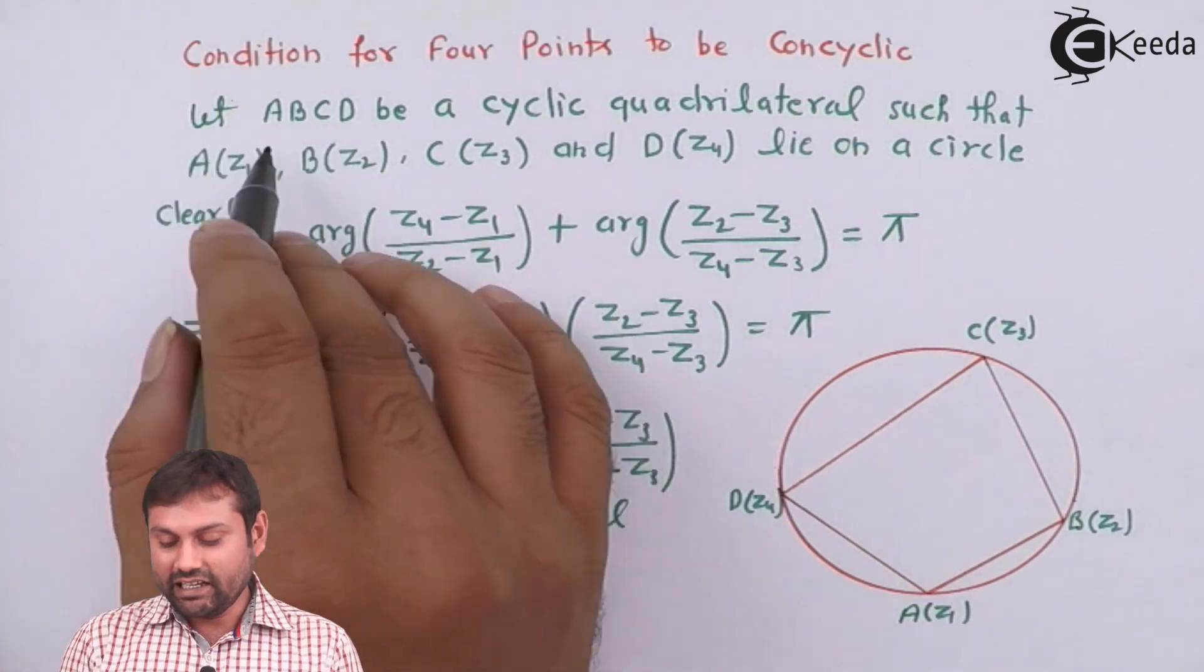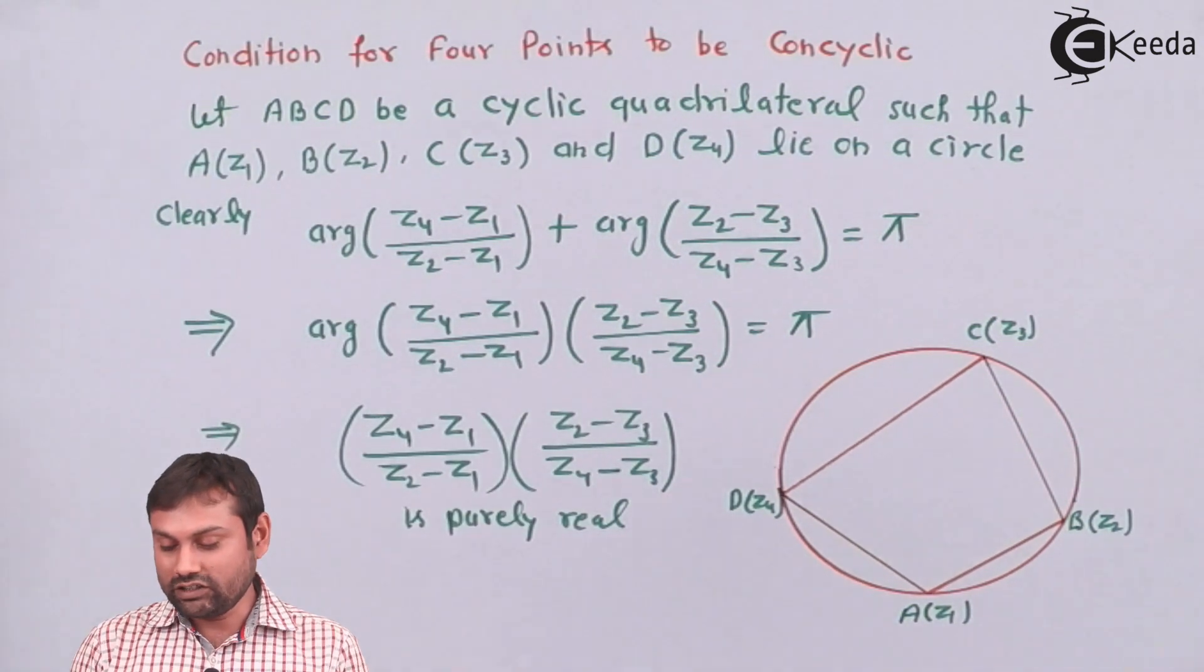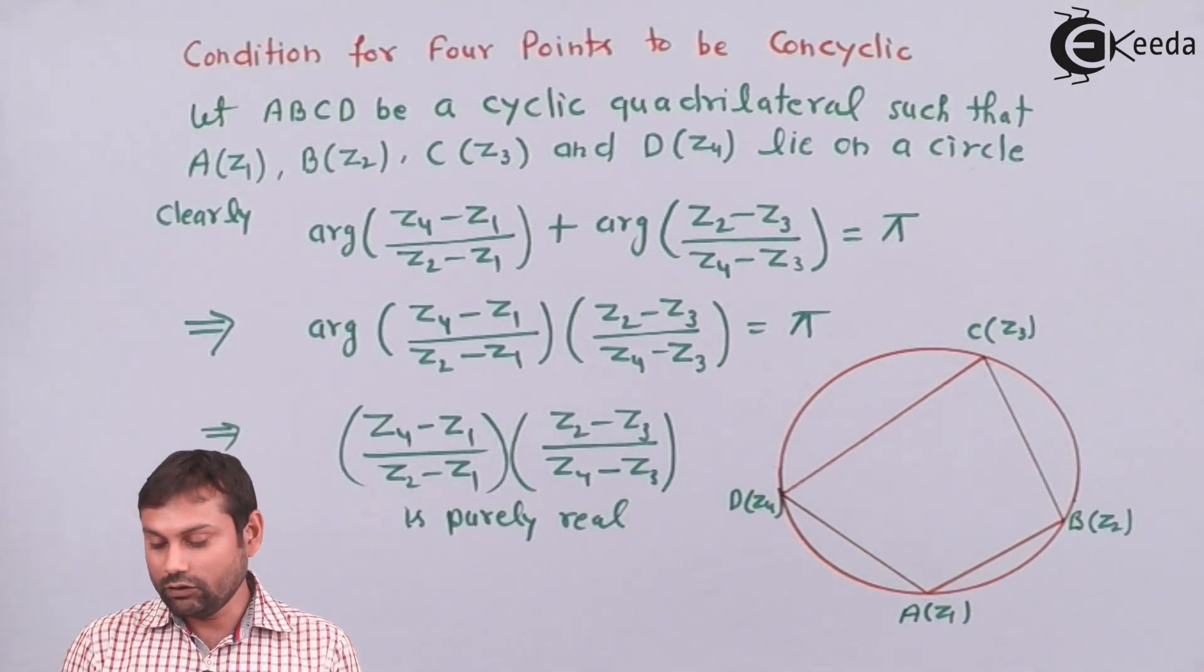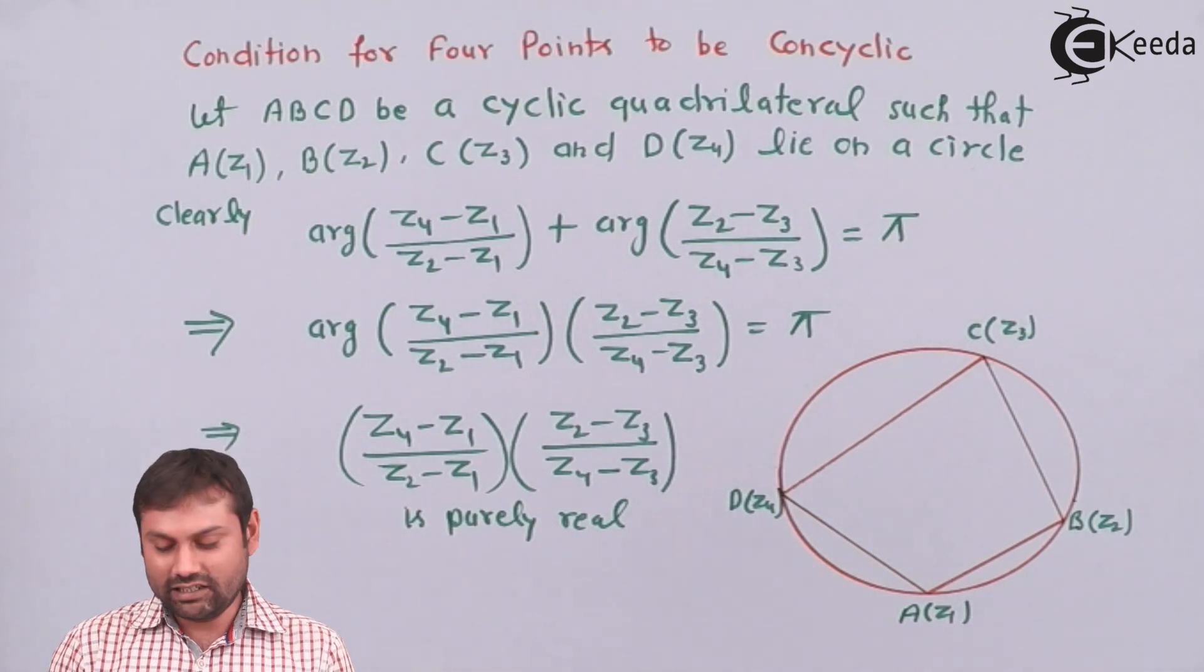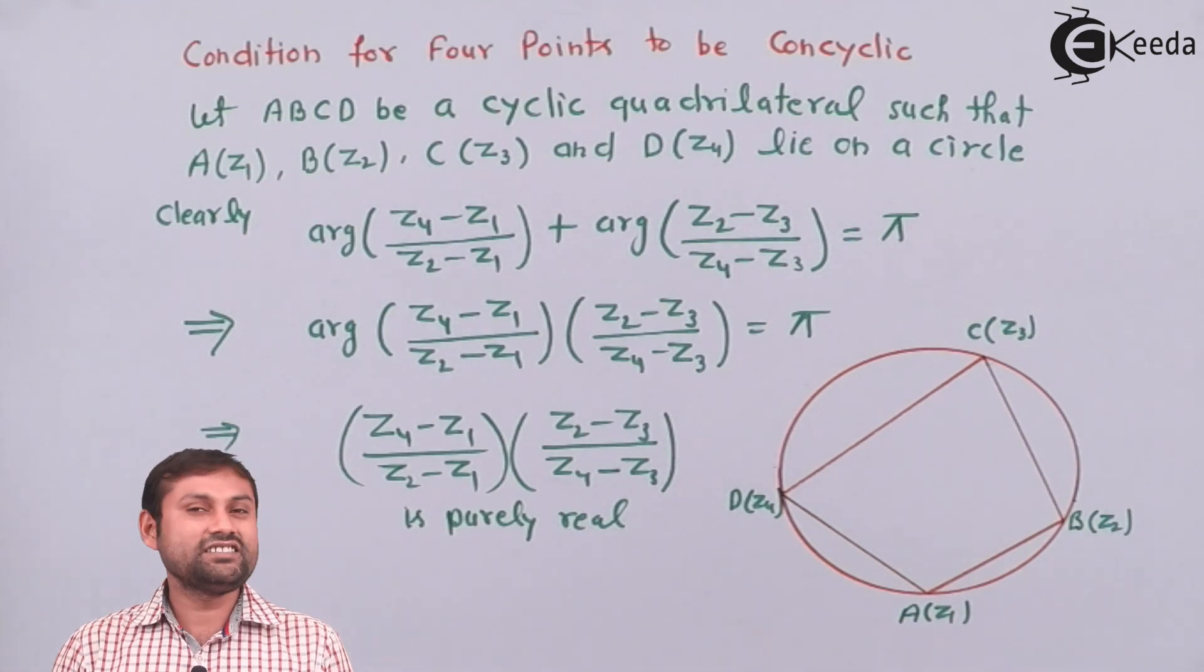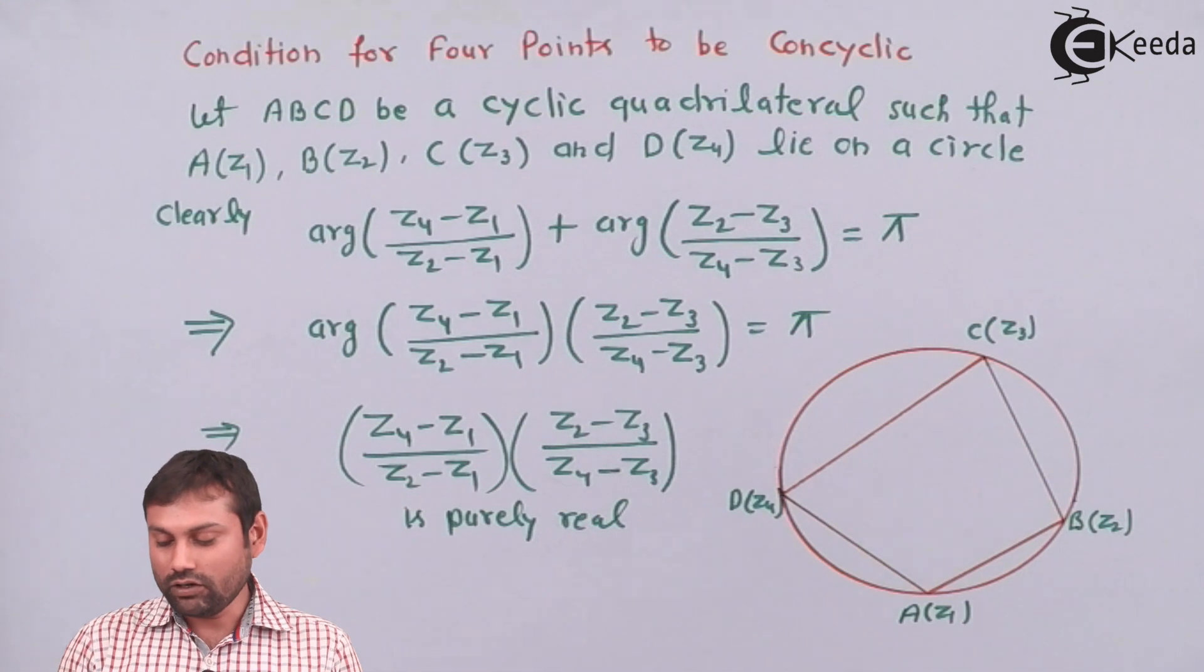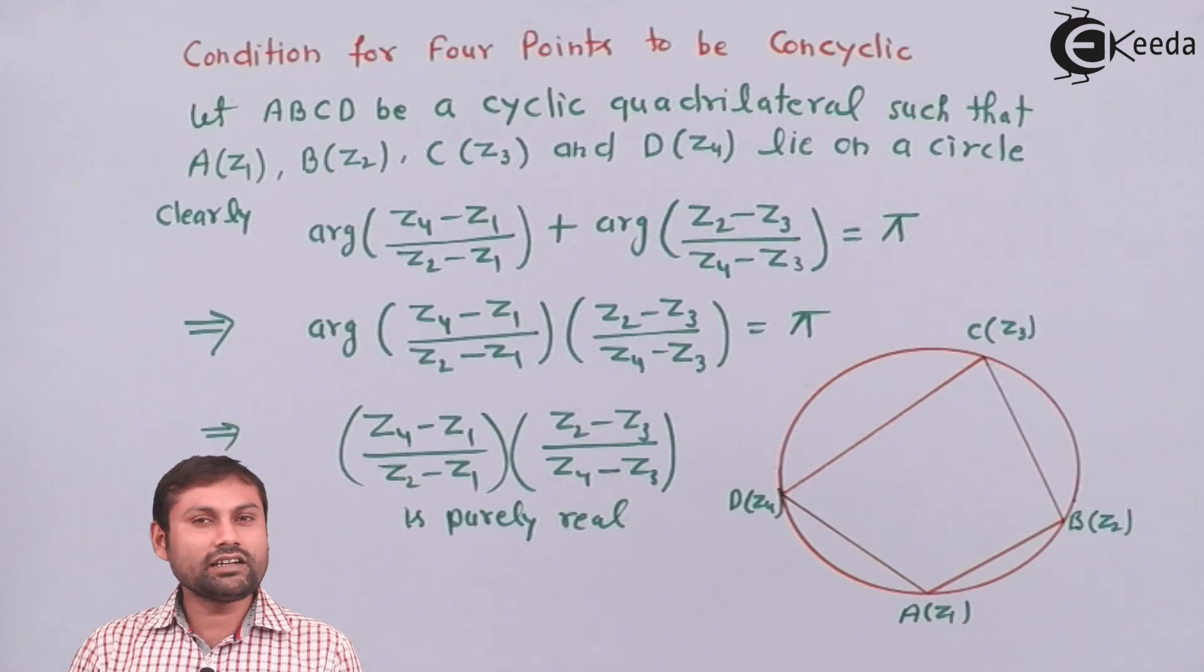So let A, B, C, D be a cyclic quadrilateral such that A(Z1), B(Z2), C(Z3) and D(Z4) lie on this circle.